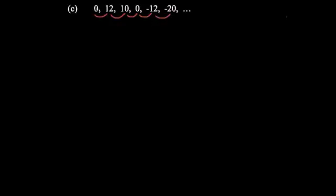Be careful with the signs. To go from 0 to 12 you have to add 12, but then to go from 12 to 10 you have to subtract 2, then subtract 10, subtract 12, and then subtract 8. Then we look at the next row.